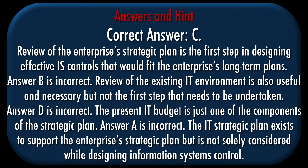Correct answer: C. Explanation: Review of the enterprise's strategic plan is the first step in designing effective IS controls that would fit the enterprise's long-term plans. Answer B is incorrect — review of the existing IT environment is also useful and necessary but is not the first step. Answer D is incorrect — the present IT budget is just one of the components of the strategic plan. Answer A is incorrect — the IT strategic plan exists to support the enterprise's strategic plan but is not solely considered while designing information system controls.